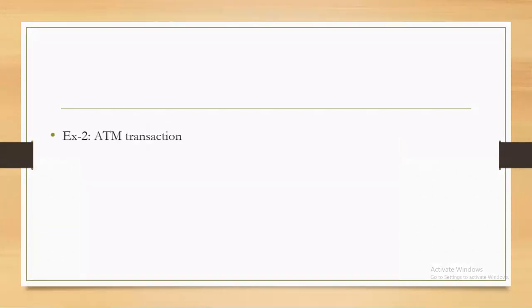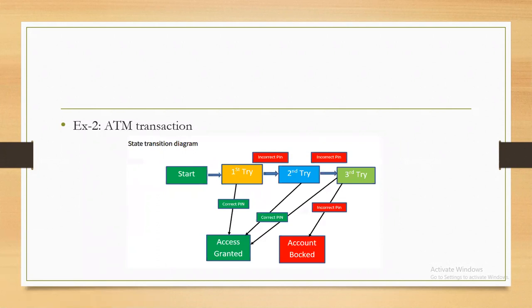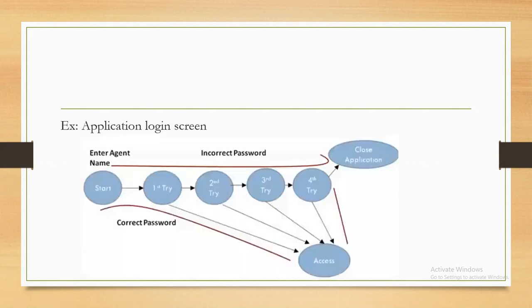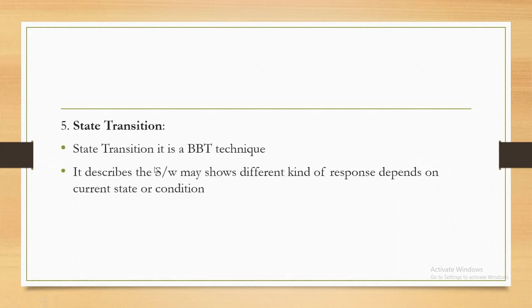Another example: when you perform an ATM transaction and enter an incorrect PIN, it gives an error message. The second time you enter the incorrect PIN, it gives an error message again. But the third time you enter the incorrect PIN, it gives an error message and your ATM card will be eaten by the machine. So the same transaction — entering an incorrect PIN — results in different application behavior in different states. That is what state transition testing covers.